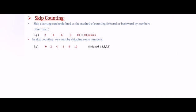Skip counting can be defined as the method of counting forward or backward by numbers other than 1. Here this is an example of counting forward by 2. In skip counting we count by skipping some numbers. Here you can see we have skipped some numbers like 1, 3, 5, 7 and 9.